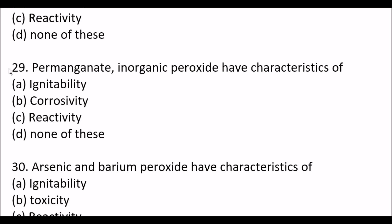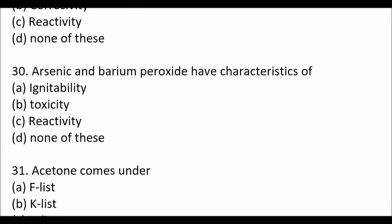Next question: Permanganate and inorganic peroxide have characteristics of - Option A - ignitability, Option B - corrosivity, Option C - reactivity, Option D - none of these. The right answer is Option C - reactivity. And the following answer regarding toxicity: right answer is Option B - toxicity.